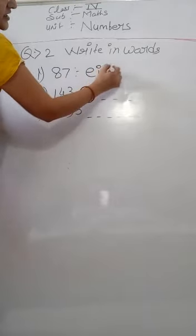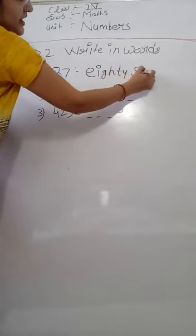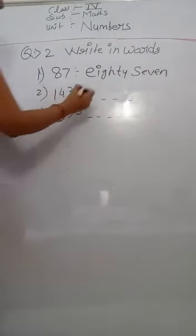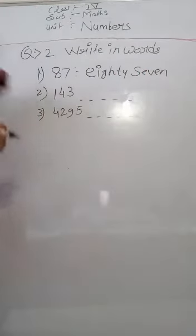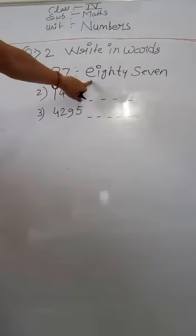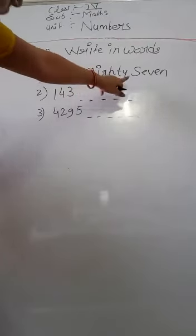87 — here is the word: E-I-G-H-T-Y S-E-V-E-N. So how to write the number 87 in words? It is eighty-seven.